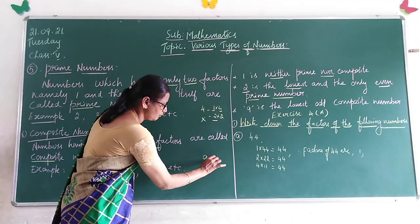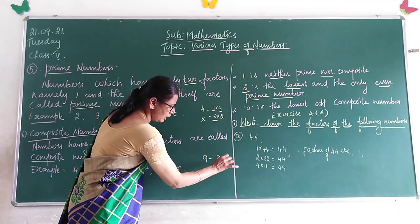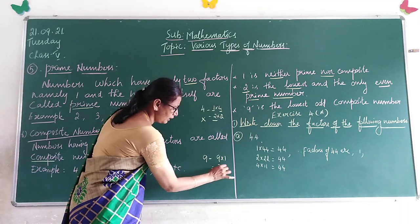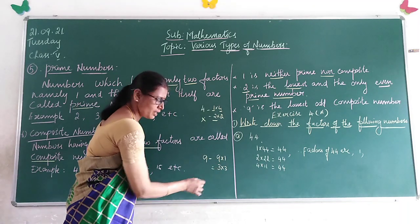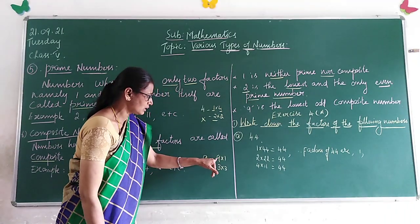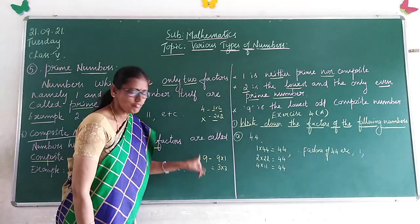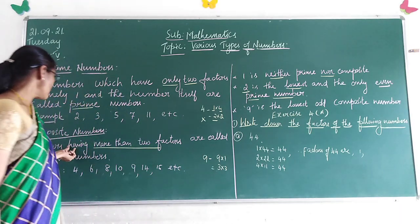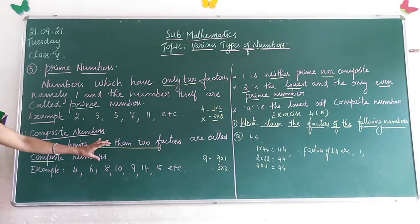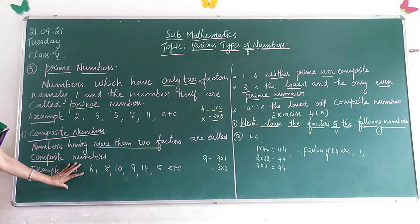Suppose if you take 9, children. 9 ones are 9. 3 threes are 9. 1 nine is 9. So how many factors are there? 9 has 1, 3, and 9, three factors. So numbers having more than two factors are called composite numbers.